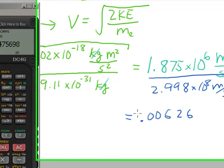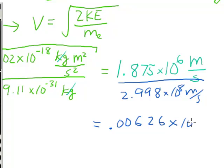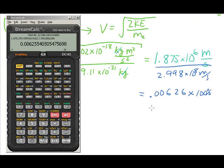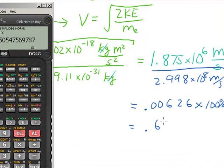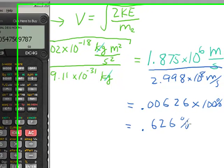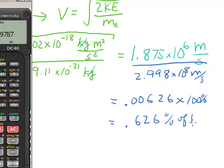And so that's equal to .00626. And if I want to compute the percentage, I could multiply by 100%. So times 100. And that's still pretty small. It's .626% of light speed.